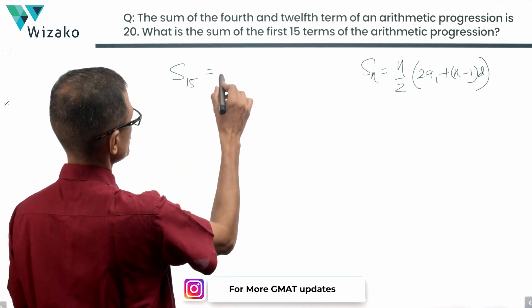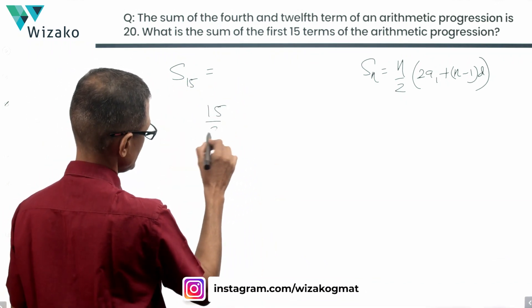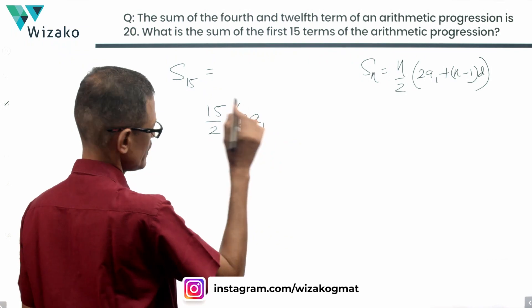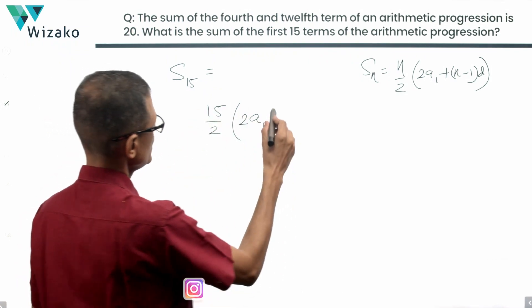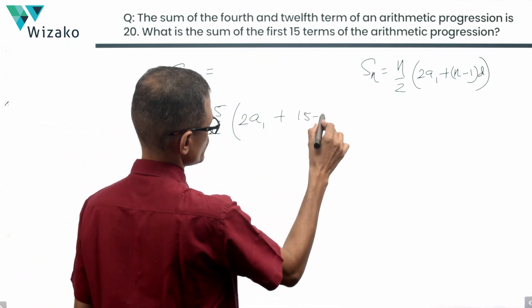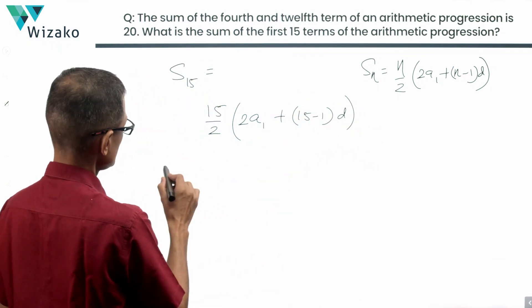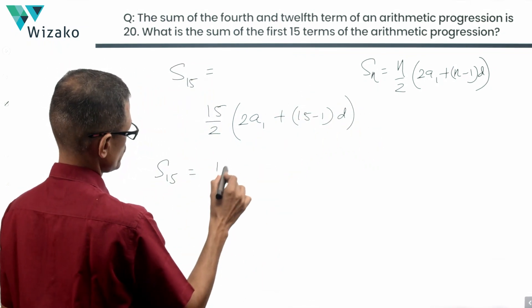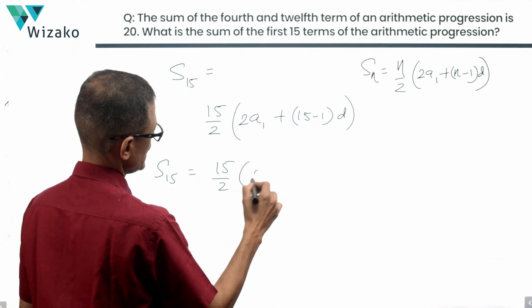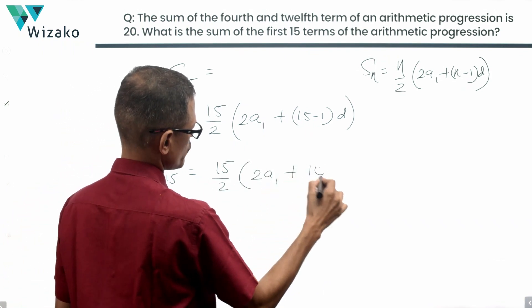For us, N is equal to 15. So that's going to be equal to 15 by 2 into 2A1. We need to find that out at some level plus N minus 1, which is 15 minus 1 into the common difference. So this sum up to 15 terms for us is 15 divided by 2 into 2A1 plus 14D.